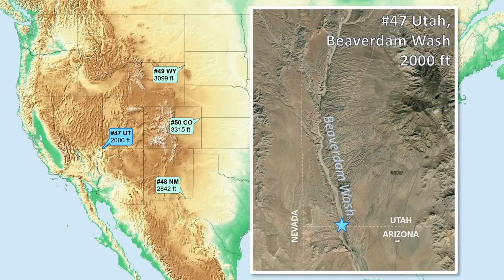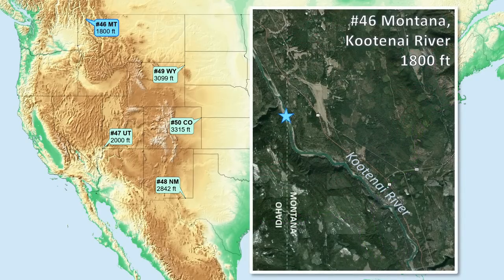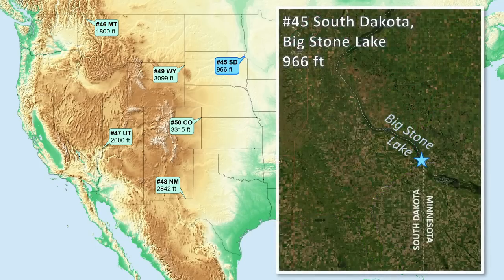Number 47 is Beaver Dam Wash. Number 46 is the Kootenai River. Number 45 is South Dakota, and our first low point below 1,000 feet.